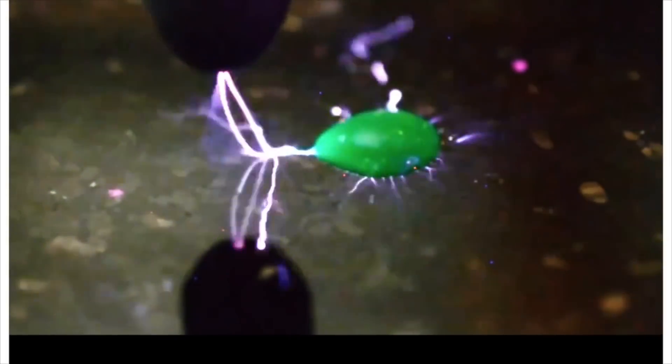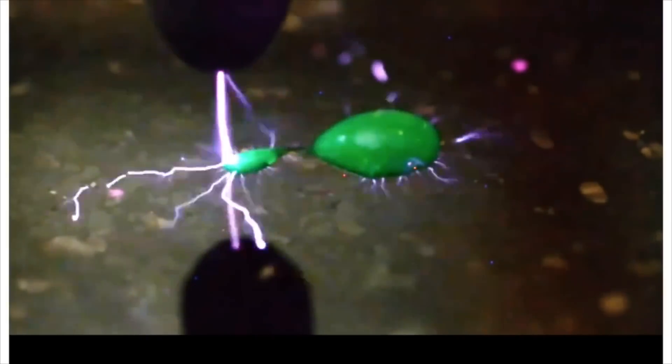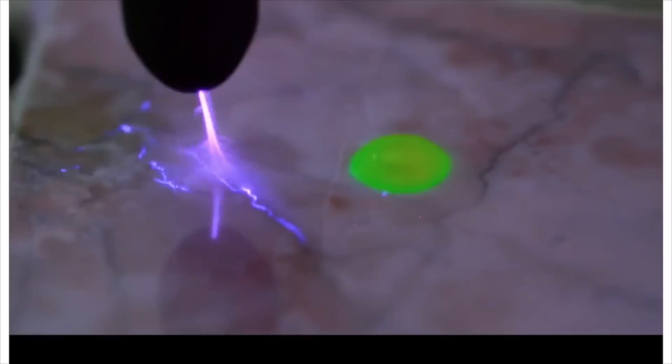You can also try this yourself at home with just static electricity. If you turn the faucet on a slow release and then use a balloon or even a plastic spoon to build up static, you will move the water.